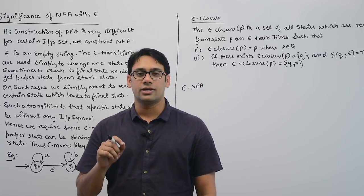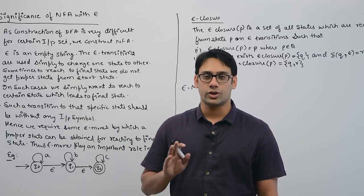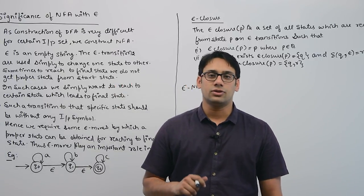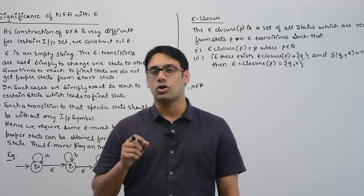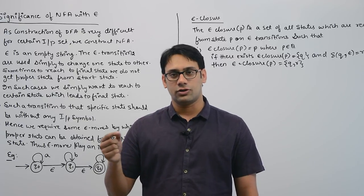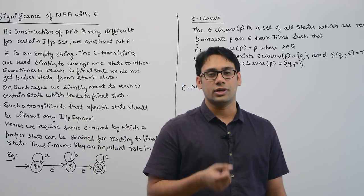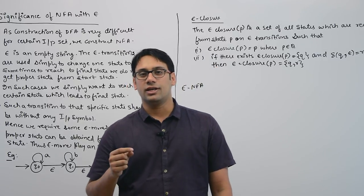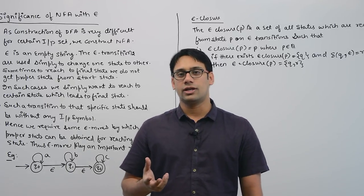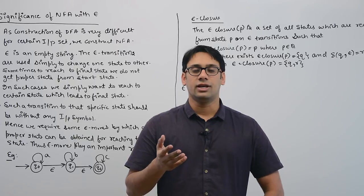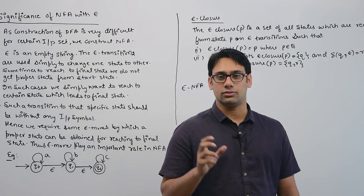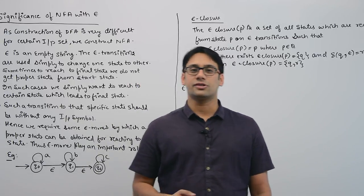This kind of epsilon-NFA can make a transition even by seeing no string whatsoever. So why do we actually need an epsilon-NFA? In some cases it becomes very difficult to draw DFAs because DFAs require more work for complicated types of languages. For those languages it is very easy to draw NFAs, and it is even easier to draw epsilon-NFAs. We can draw an epsilon-NFA, then convert it to an NFA, and then convert that NFA to a DFA — that becomes a very easy process.